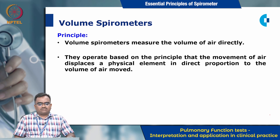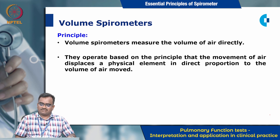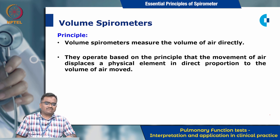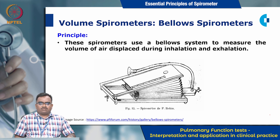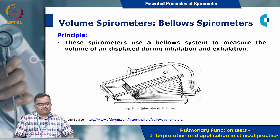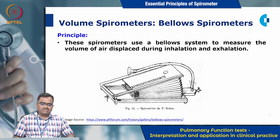Volume spirometers: as the name indicates, they measure the volume of air directly. They operate based on the principle that the movement of air displaces a physical element in direct proportion to the volume of air moved. Among various volume spirometers, number one is the bellows spirometer, which is based on the principle of a bellows system to measure the volume of air displaced during inhalation and exhalation.